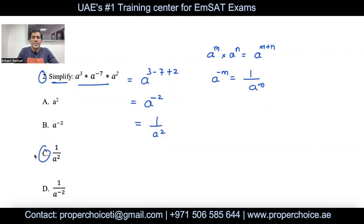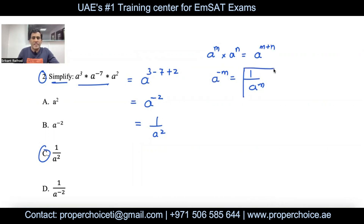Many students might choose option B because a⁻² appears as an intermediate step. However, since the question asks to simplify, and the exponential rule says a negative power must be rewritten as a positive reciprocal, the final simplified form is 1/a², making option C the correct answer, not B.